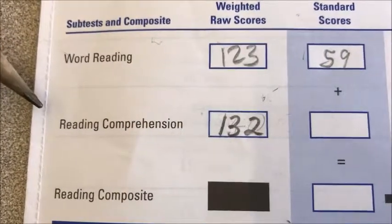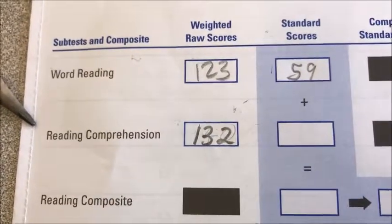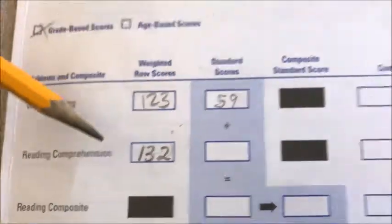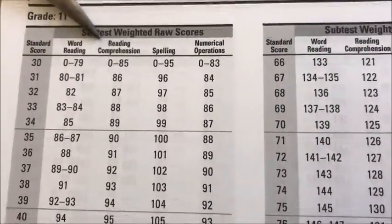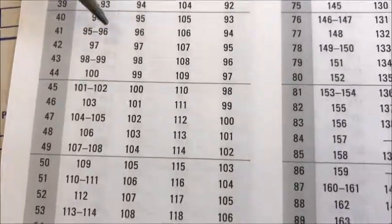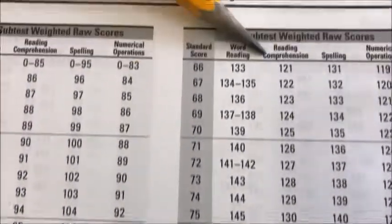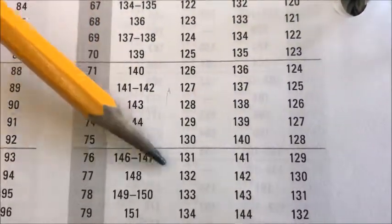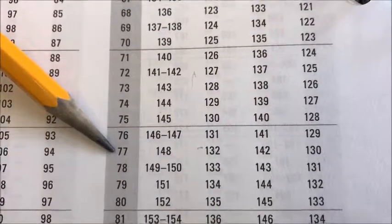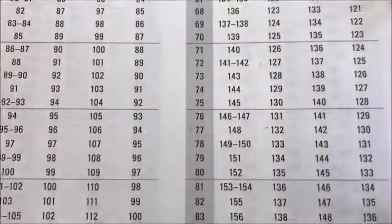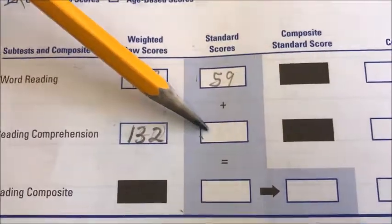Now we need to find the standard score for reading comprehension. Our weighted raw score is 132. So we're back to the table, in the reading comprehension column, and we're going to find 132. There it is — and the corresponding standard score is 77. We write that in the box next to reading comprehension.